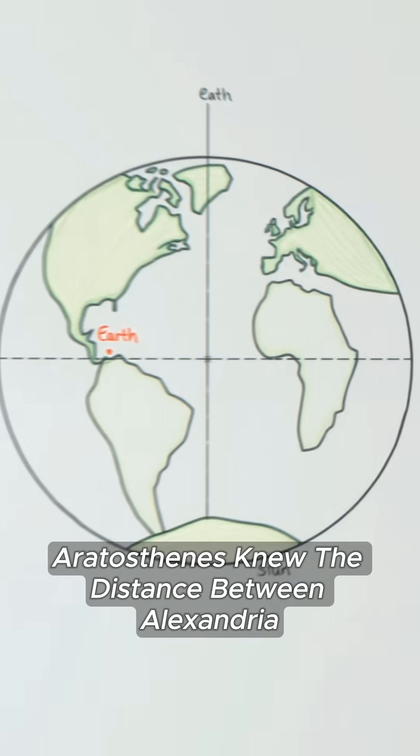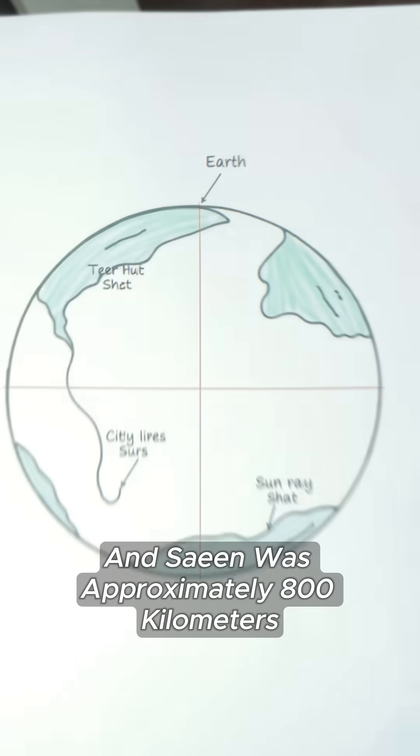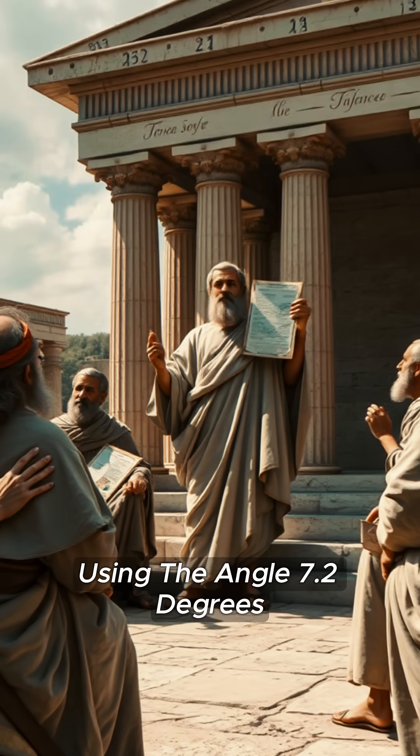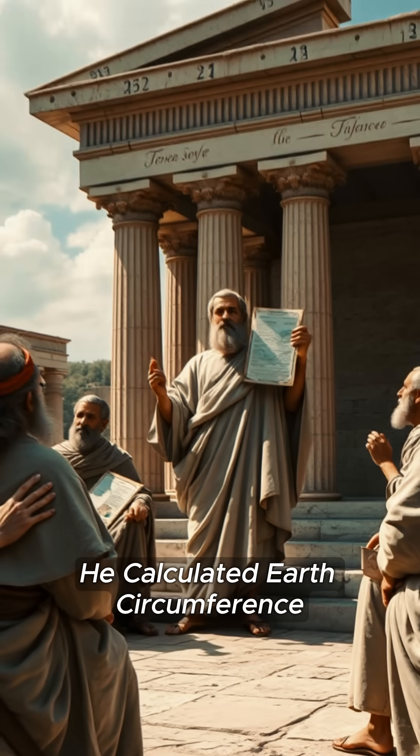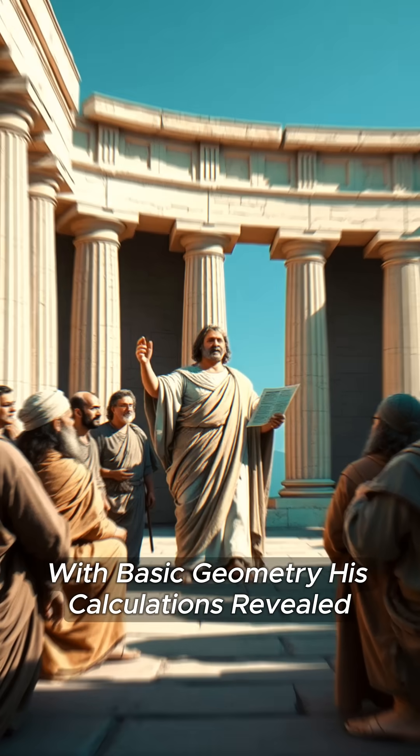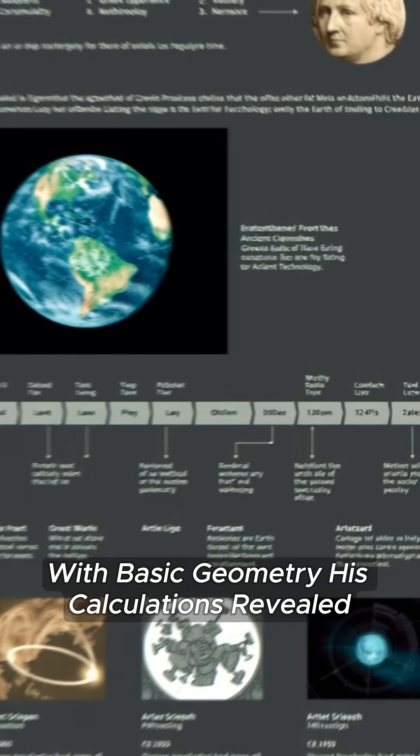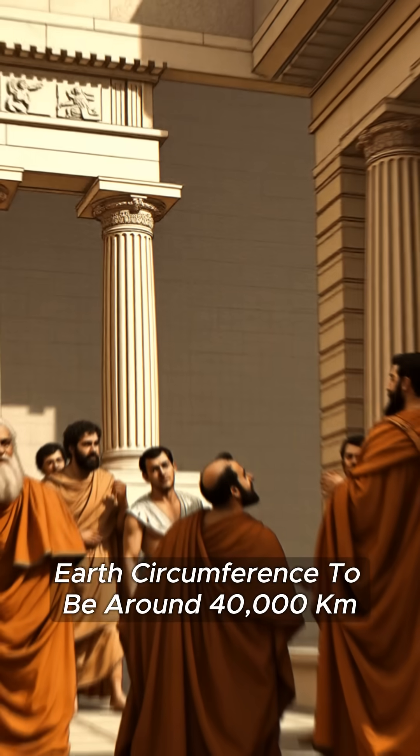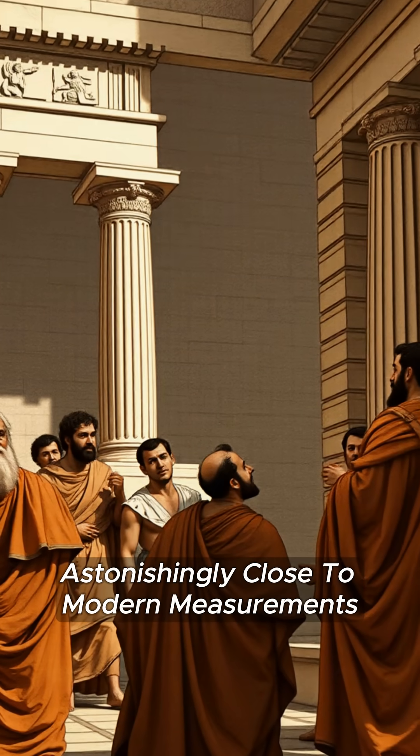Eratosthenes knew the distance between Alexandria and Cyene was approximately 800 kilometers. Using the angle, 7.2 degrees, he calculated Earth's circumference with basic geometry. His calculations revealed Earth's circumference to be around 40,000 kilometers, astonishingly close to modern measurements.